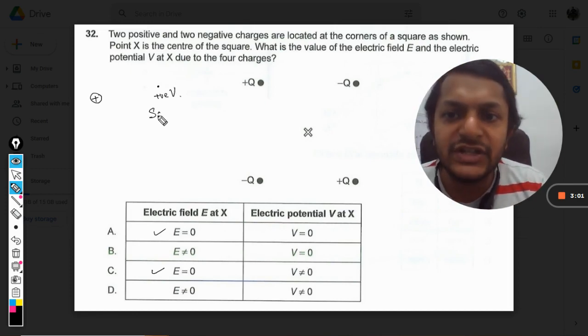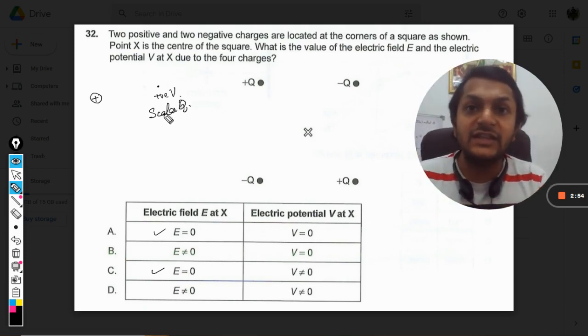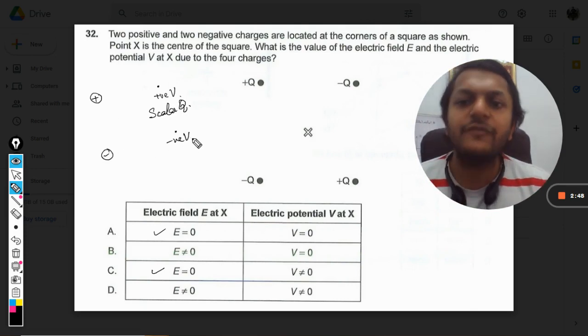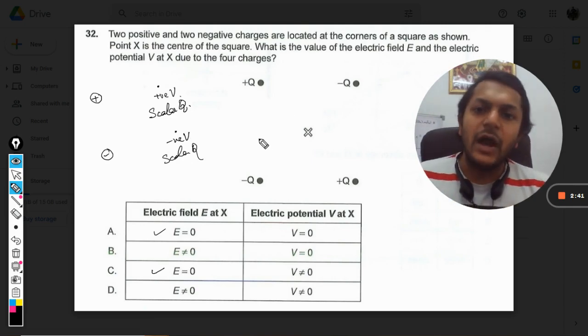And potential is a scalar quantity, so that is why I am not showing any direction there. But I am just saying that the potential is positive. And the negative charge will be casting negative potentials wherever required, in the vicinity. But again, it is a scalar quantity, so I am not showing you the direction.